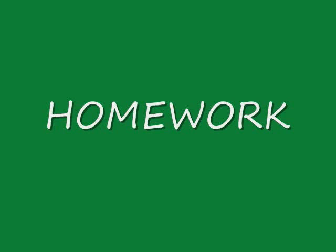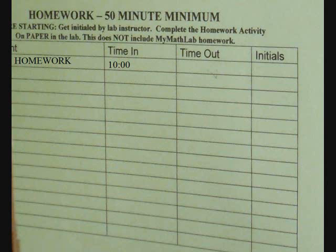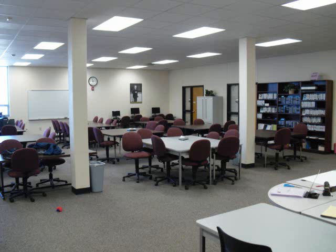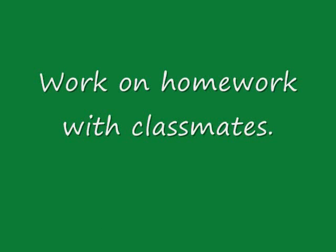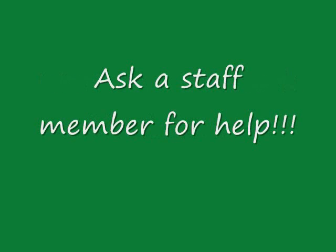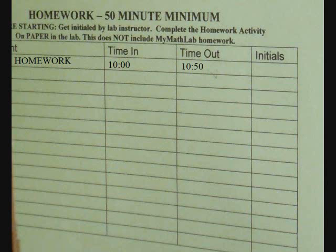Now let's talk about the different activities you can do in the Math Hub to get credit for lab assignments. The first is doing your homework. When you take your Math Hub card to a staff member and tell them that you want to do homework, they will indicate this on your card and write down the time that you started. Have a seat at one of the tables and begin your homework. If you see someone else from your class, you can sit with them and work together. If you get stuck on a problem, get the attention of one of the staff members and they will assist you. When you are finished, take your Math Hub card and your homework to one of the staff members. They will initial your homework and write down the time that you finished on your card. Please note you must work a minimum of 50 minutes on homework in order for it to count as a lab assignment.